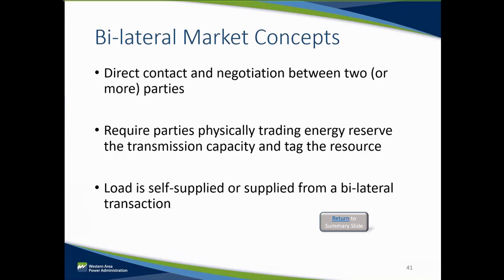In this construct, the individual BA areas self-supply their network native load and firm obligations within each of their footprints, either through the scheduling and dispatch of their own generation resources or by utilizing a bilateral contract with another entity to purchase energy to supply their total BA load. Balancing authority operators are the ones making the decisions in the bilateral market instead of the market solving for them. They are making the final balancing decisions, and management is deciding in what order to dispatch its generation instead of a market.